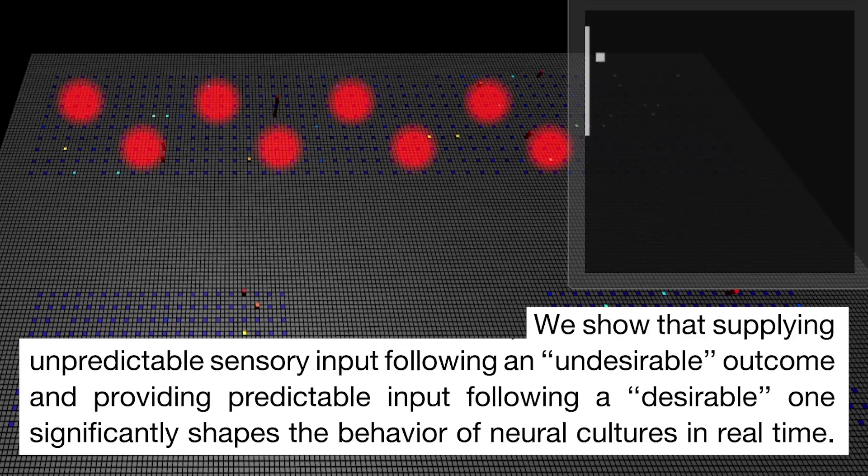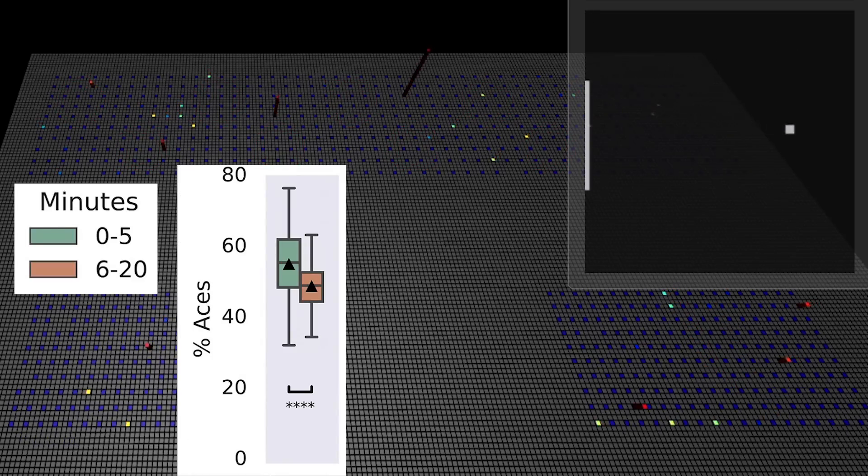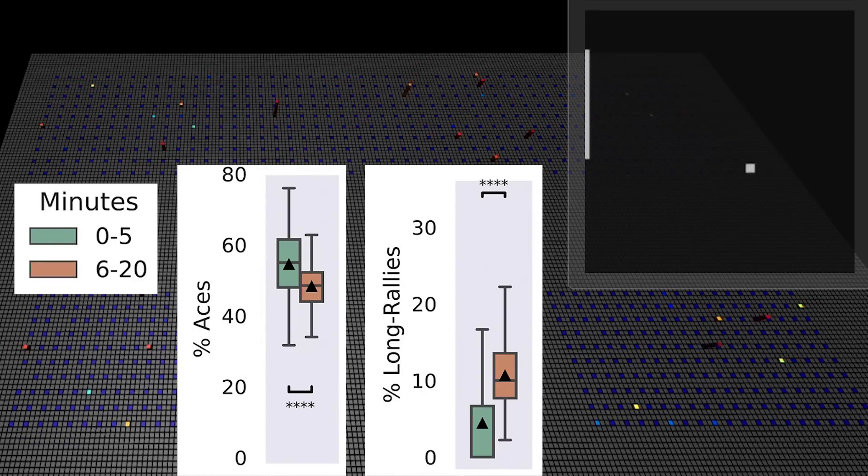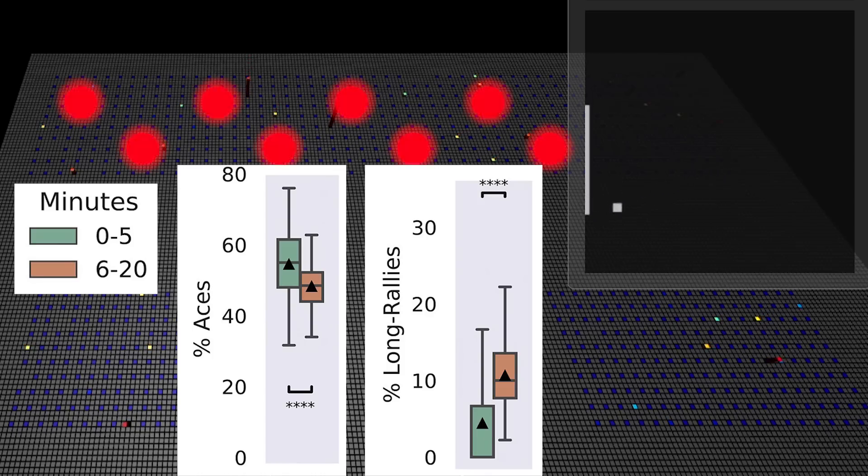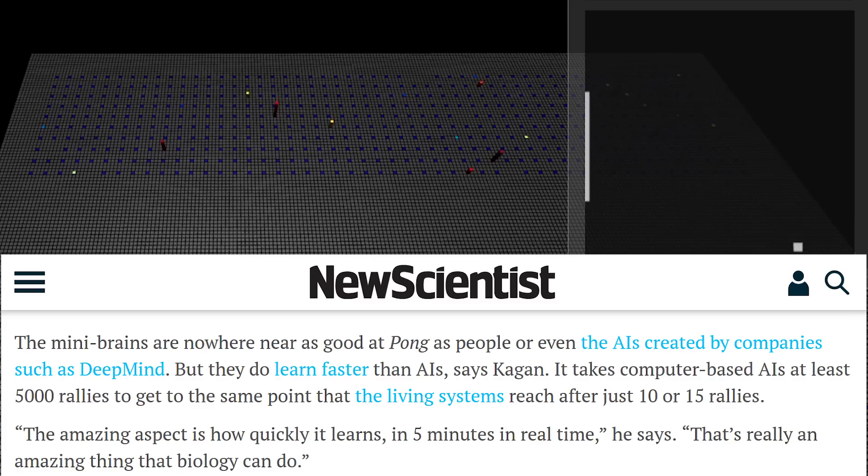And when they hit the ball, they got predictable stimulation as a reward. And it worked. They got better at returning the ball over a 20-minute training session. They got aced less often, and had significantly longer rallies. They still weren't great. You could easily beat them. But they learned in 10 or 15 rallies what it took a digital AI 5,000 rallies to learn.